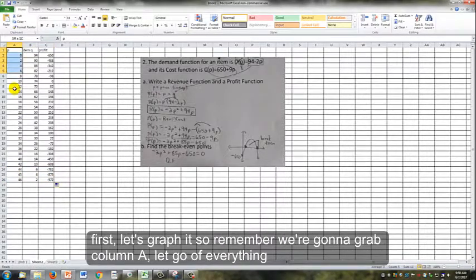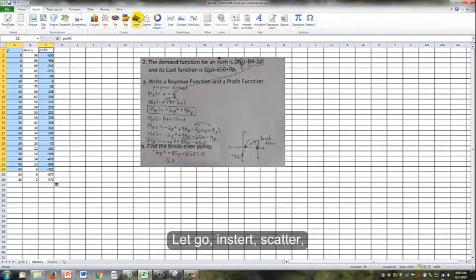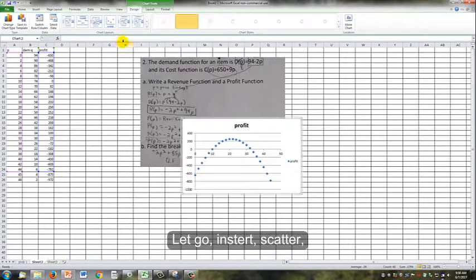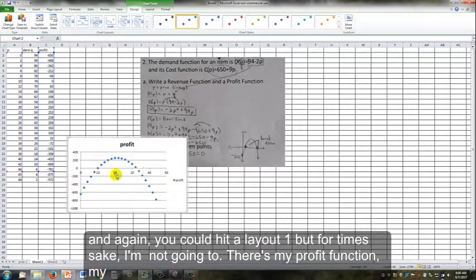But first, let's graph it. We're going to grab column A, let go of everything, hit Control, grab Profit, let go, Insert, Scatter. You could hit Layout 1, but for time's sake, I'm not going to. Here's my profit function.